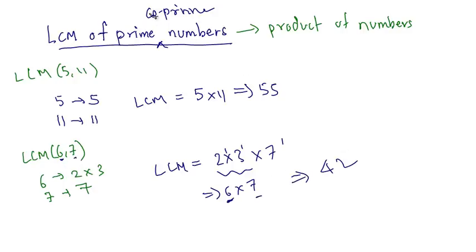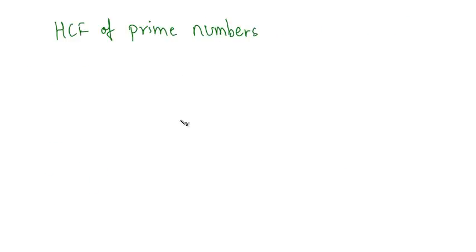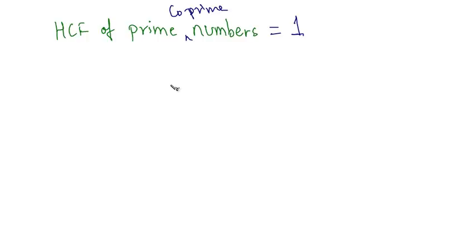So we can now easily say that if you have to find out the LCM of a set of numbers and you see that these numbers are prime or co-prime, you don't have to calculate the factors — just multiply all those numbers. As for the HCF of prime numbers, it is actually 1. If you take a set of prime or co-prime numbers, the common factor is 1. Since the only common factor is 1, that is also the highest common factor.